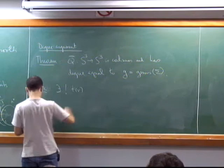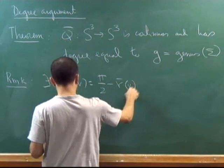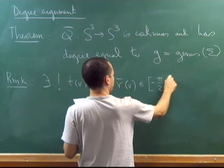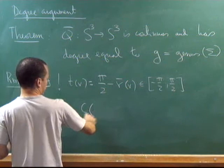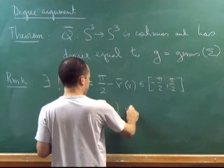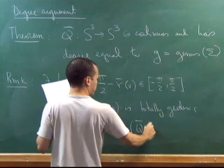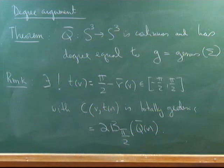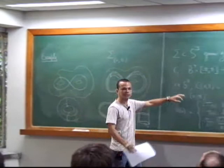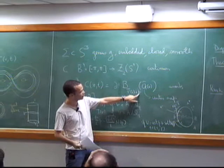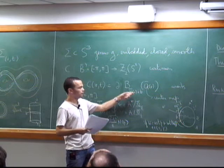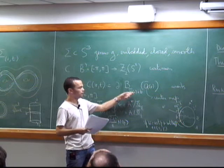There is a unique T(v) which is pi/2 minus R-bar(v), a number between -pi/2 and pi/2, such that the corresponding surface is totally geodesic. This would be the boundary of the ball of radius pi/2 centered at Q-bar(v). R-bar is computed explicitly — it's a number that comes in the calculation. For example, at time zero, the limit could depend on the angle of convergence, so you get varying radii over there.